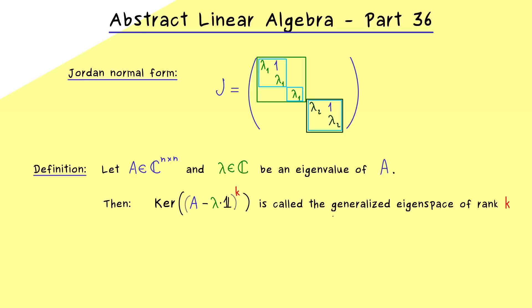Hence we introduce a new name here, this is what we call the generalized eigenspace of rank K. So in particular this means if we have rank 1, we have our ordinary eigenspace again. And moreover, now we also want to talk about generalized eigenvectors as well.